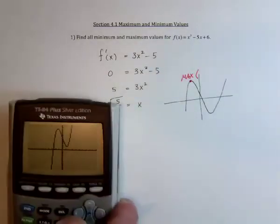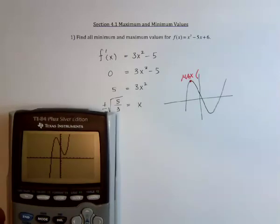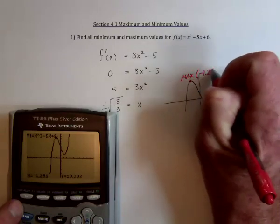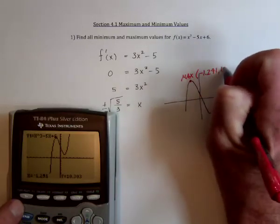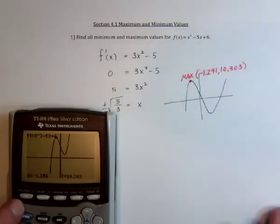And what I can do on the calculator is both check my answer and get the decimal values at the same time. So go to trace and plug in the negative square root of 5 thirds. And that's at negative 1.291 comma 10.303 for the maximum value.